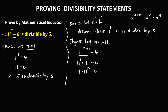We rewrite 11 as 10 plus 1, because 10 is divisible by 5, then times 11 to the power k. This becomes 10 times 11 to the power k plus 11 to the power k minus 6.